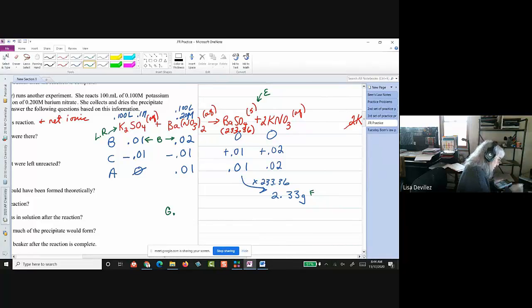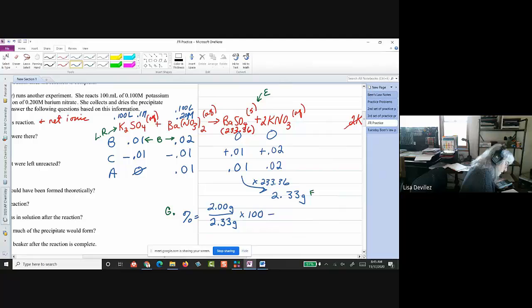My percent yield is going to be the actual, which was 2 grams, over my theoretical, 2.33 grams, times 100. So, 2, divided by 2.33. And, I'm getting about 86 percent for that.